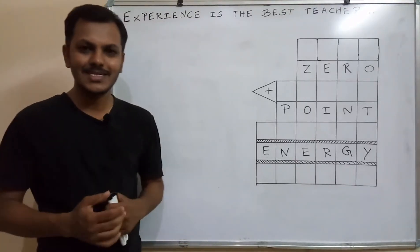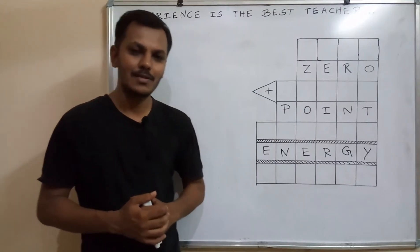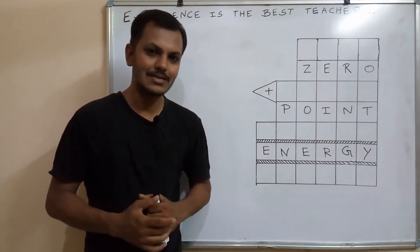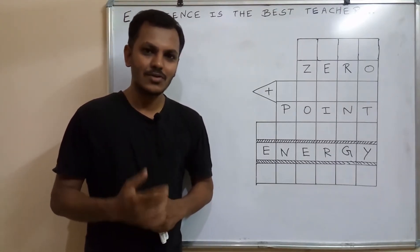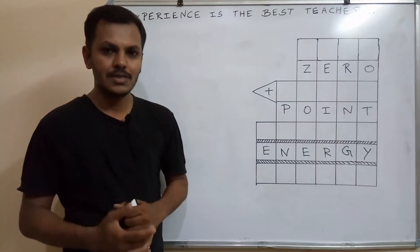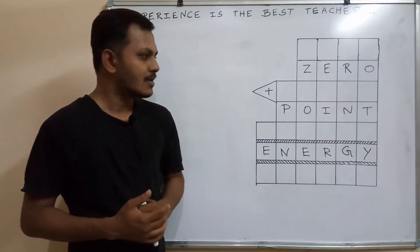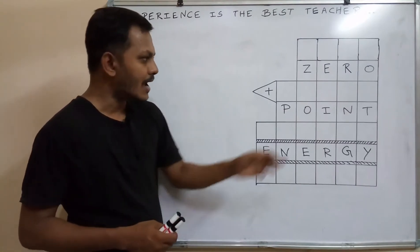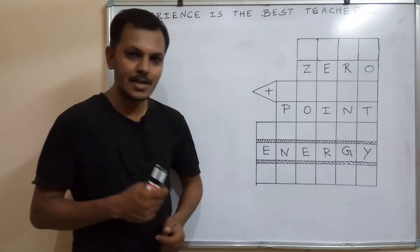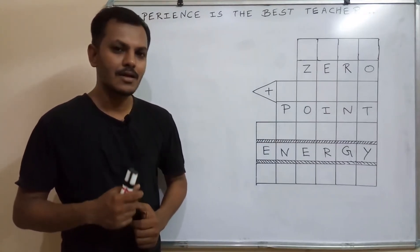Welcome. In this video, we are going to see one cryptarithmetic problem in artificial intelligence. The question is O plus POINT equals ENERGY. That is, when we are adding this 4-digit number with a 5-digit number, we are getting a 6-digit number.